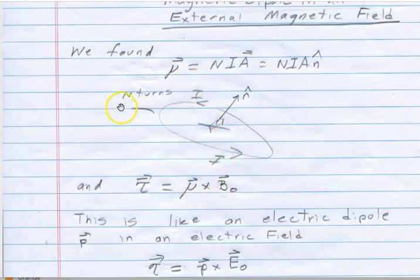And if I have n turns, so n wraps of wire, each one of the pieces of wire has the current I going through it, then the magnetic dipole moment was this expression: n*I times the area vector, where the area is the area enclosed by the current loop, and n-hat is the perpendicular to the surface.